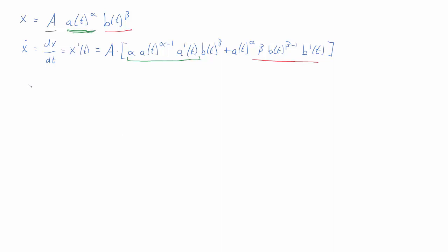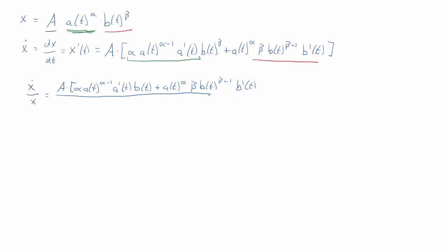That's the change of x with respect to time, or ẋ. Now let's calculate the growth rate by dividing through by x. We replicate ẋ in the numerator and in the denominator we have x, which is A times a(t)^α times b(t)^β. Let's see how we can simplify this — it looks pretty messy as it is.